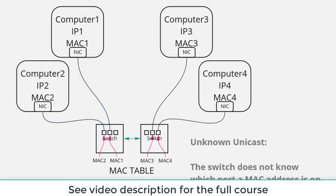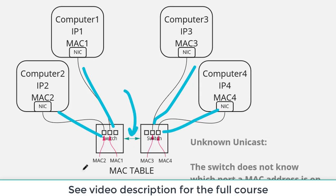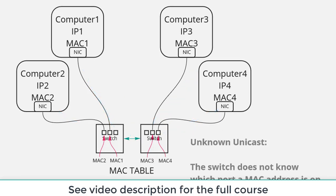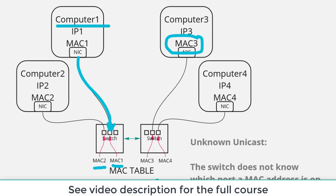Now let's break down what an unknown unicast is. Here we now have two switches — two computers connected to one switch, two computers connected to the other, with an inter-switch link in the middle, sometimes called daisy chaining. This allows multiple switches to act like one big switch. In this case, computer one sends an Ethernet frame destined for MAC address three, which arrives at the first switch. The switch says: MAC address three — I don't have it in my MAC table, I don't know where to send it. This is an unknown unicast.